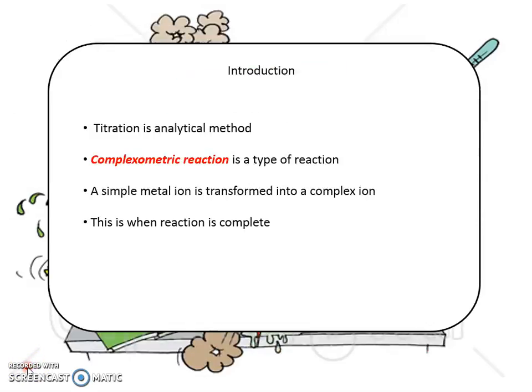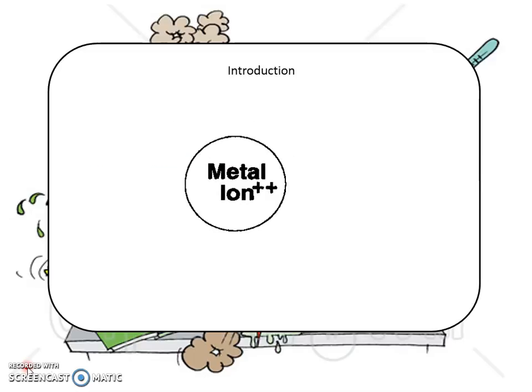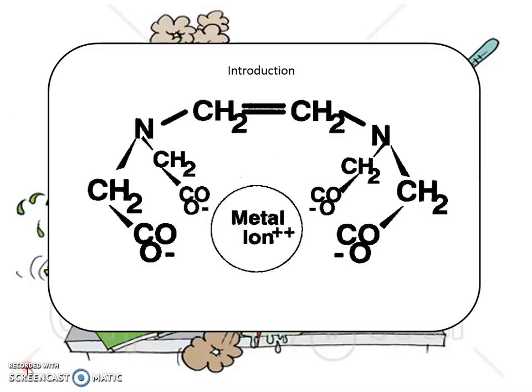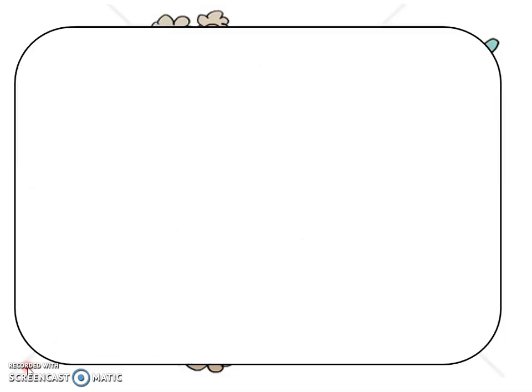For complexometric titration, a simple metal ion is transformed into a complex ion — this is when the reaction will be completed. A simple ion reacts to form a complex ion, and this is when the reaction is complete. The animated example is as follows.